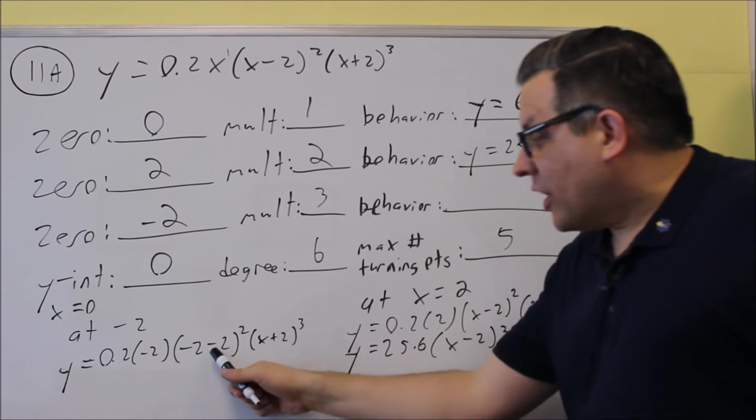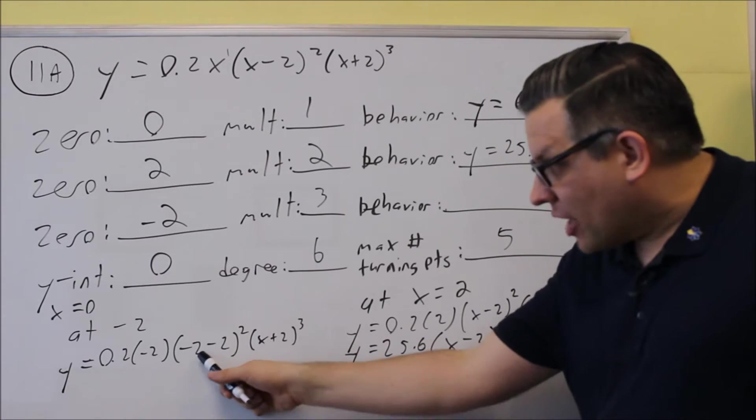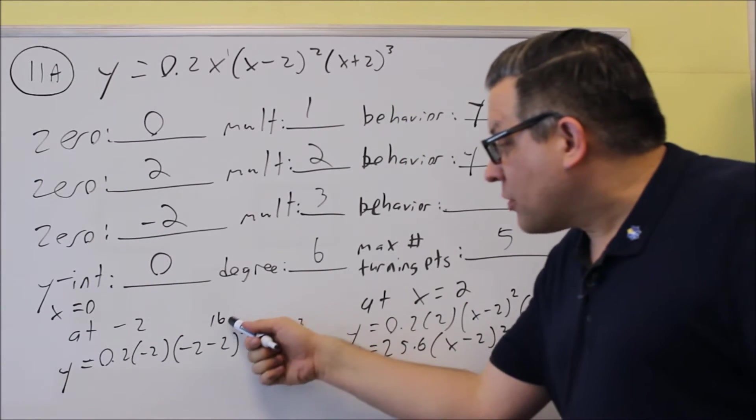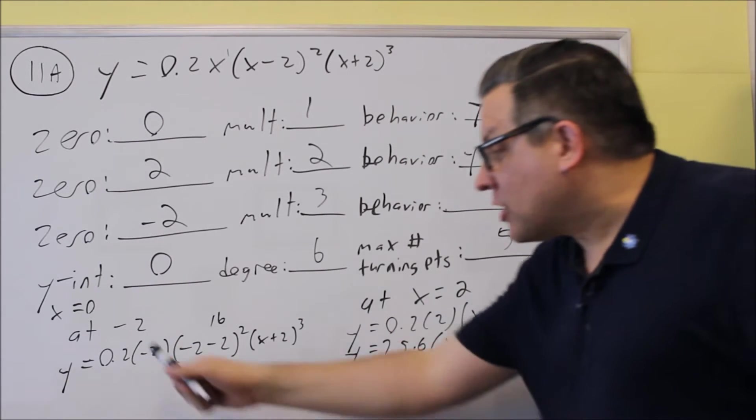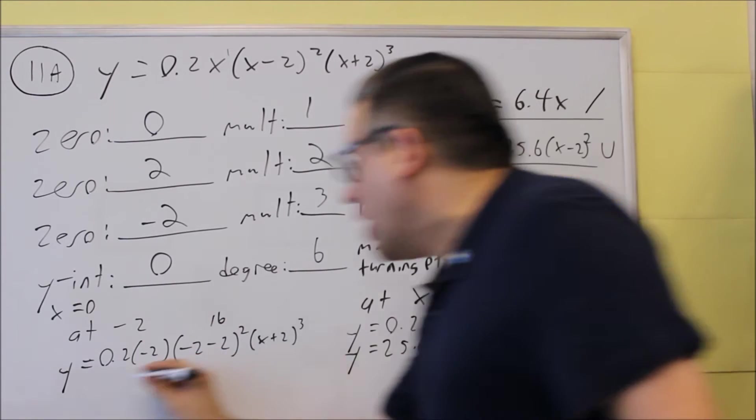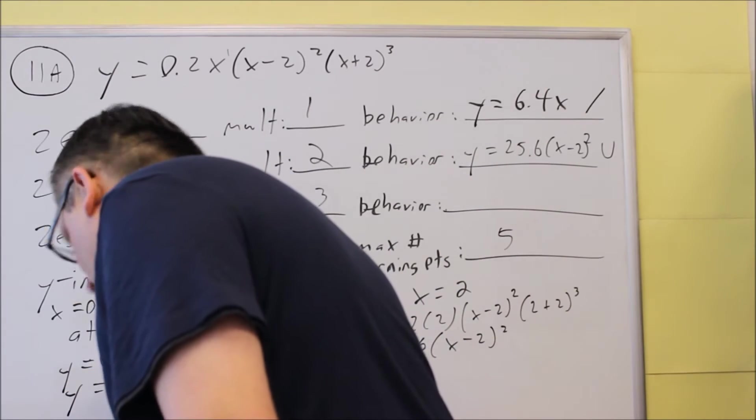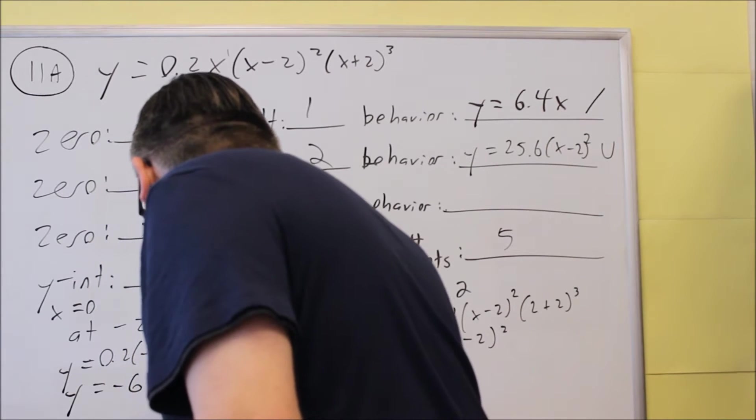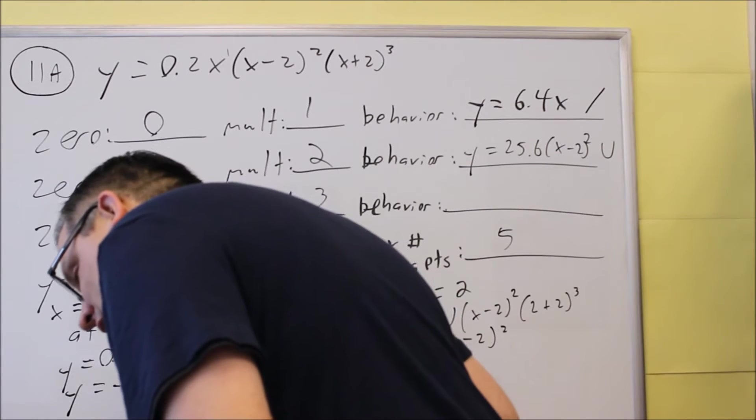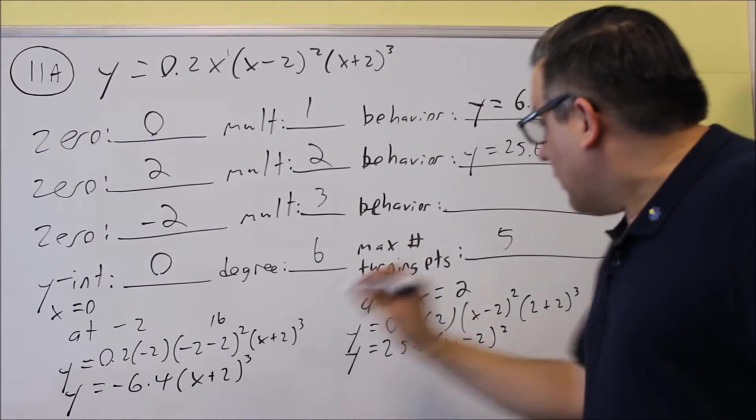This part is going to give us 16, negative 4 squared, that's positive 16 we get from that. We're multiplying it by negative 2, and then we're multiplying that by 0.2. So if you multiply all those together, what you're going to end up with is a negative number, negative (x+2) cubed, we get for that one, and that's what's going to go here.